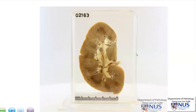In summary, this is a case of cortical necrosis in the kidney, where the renal cortex is pale and necrotic, and the renal medullas are preserved and viable. If this is bilateral and diffuse, it could result in fatality.